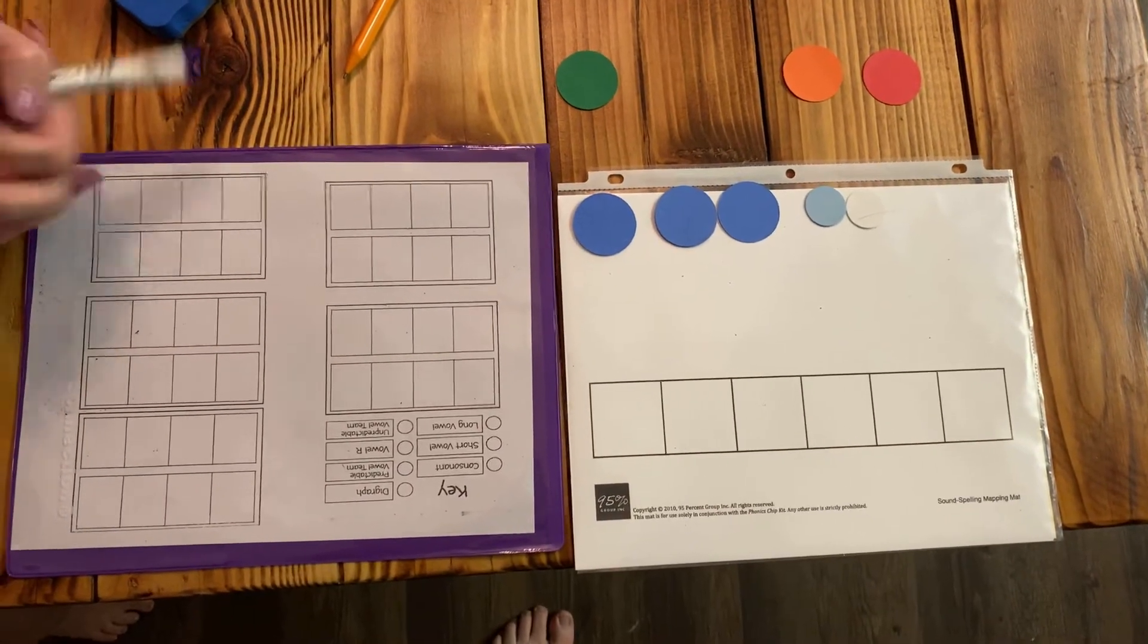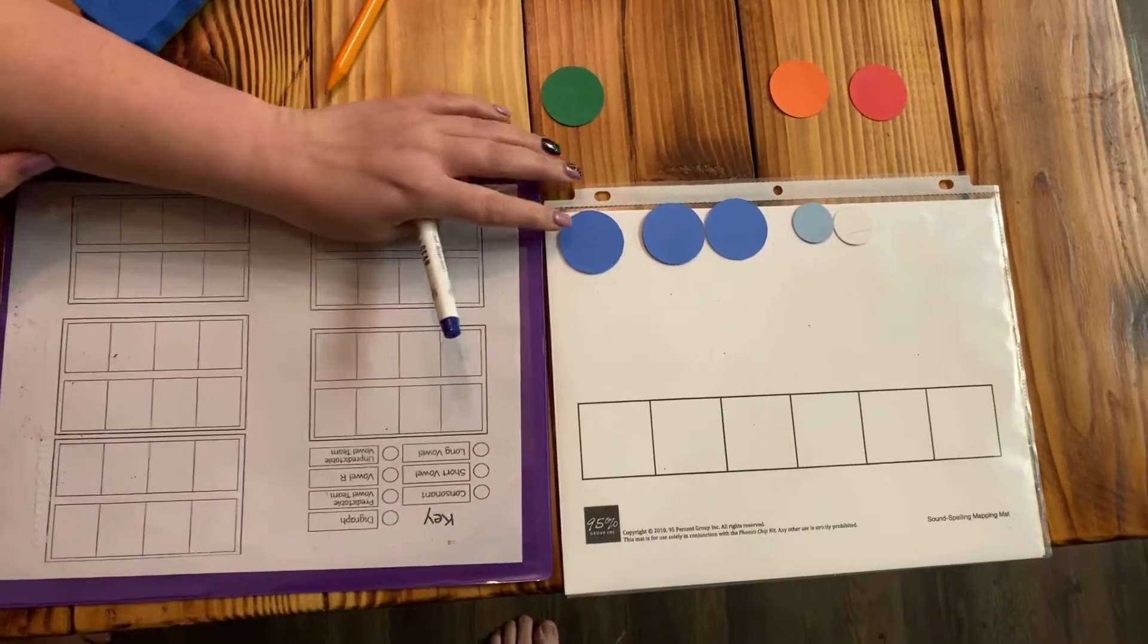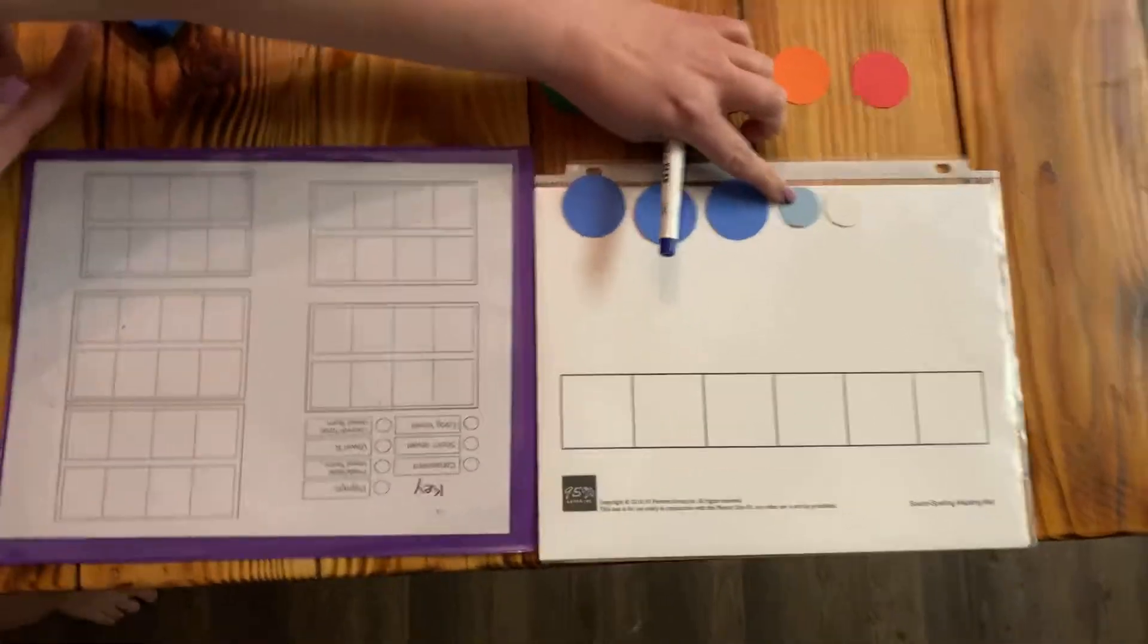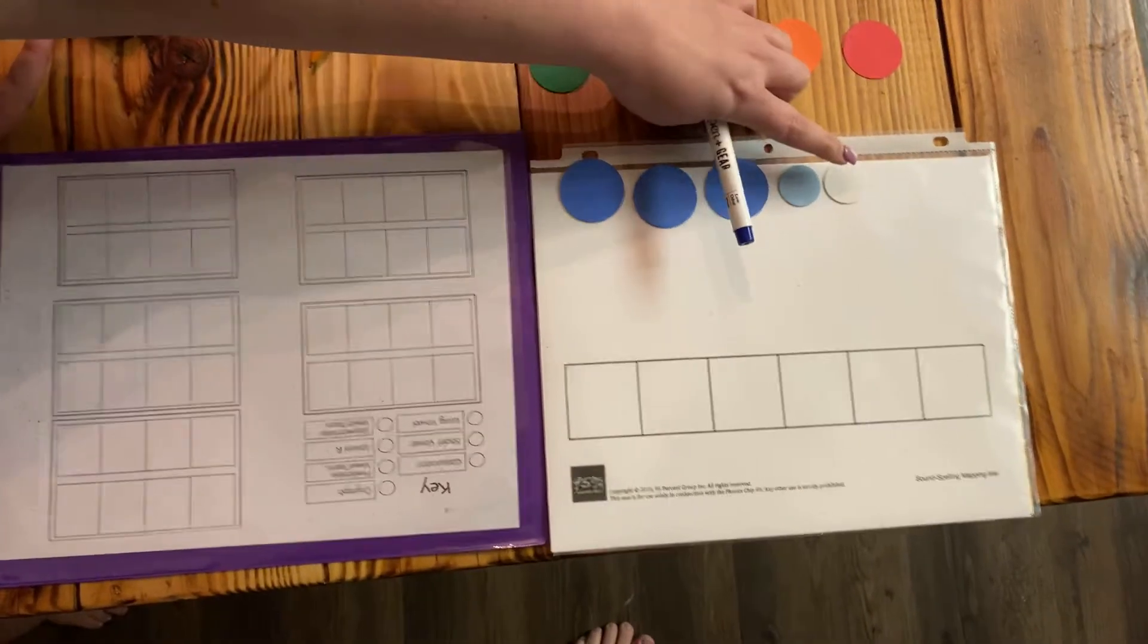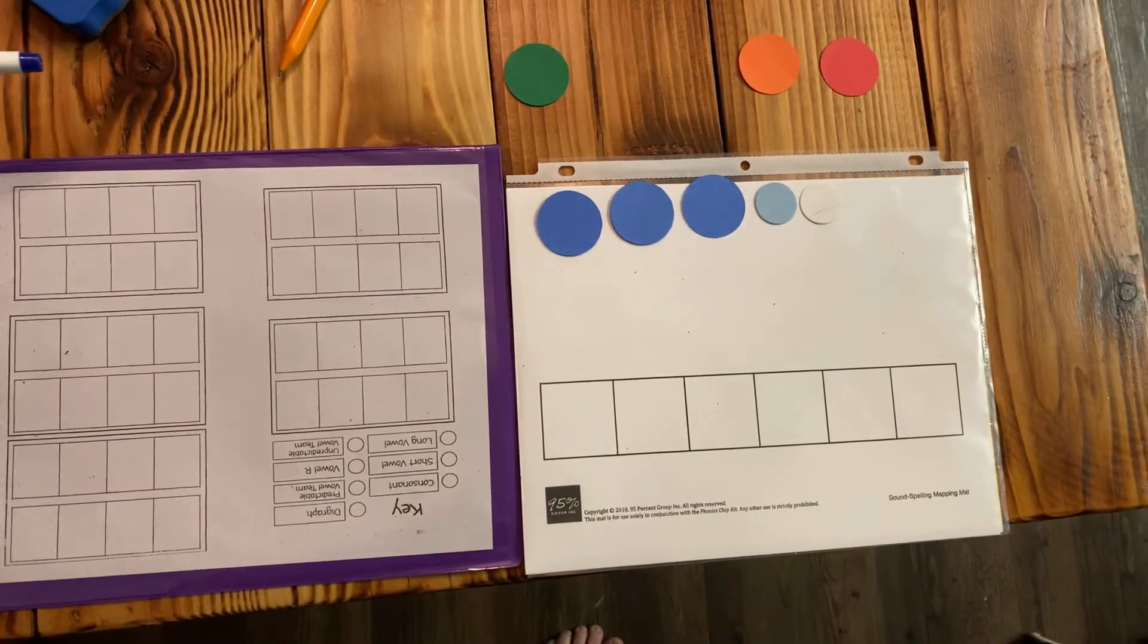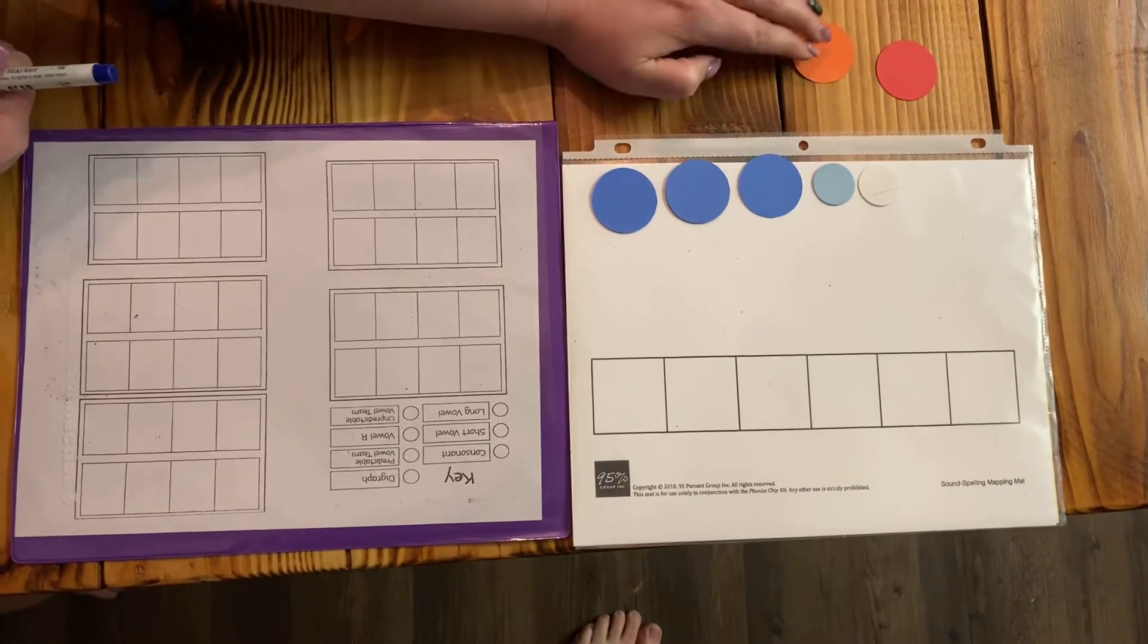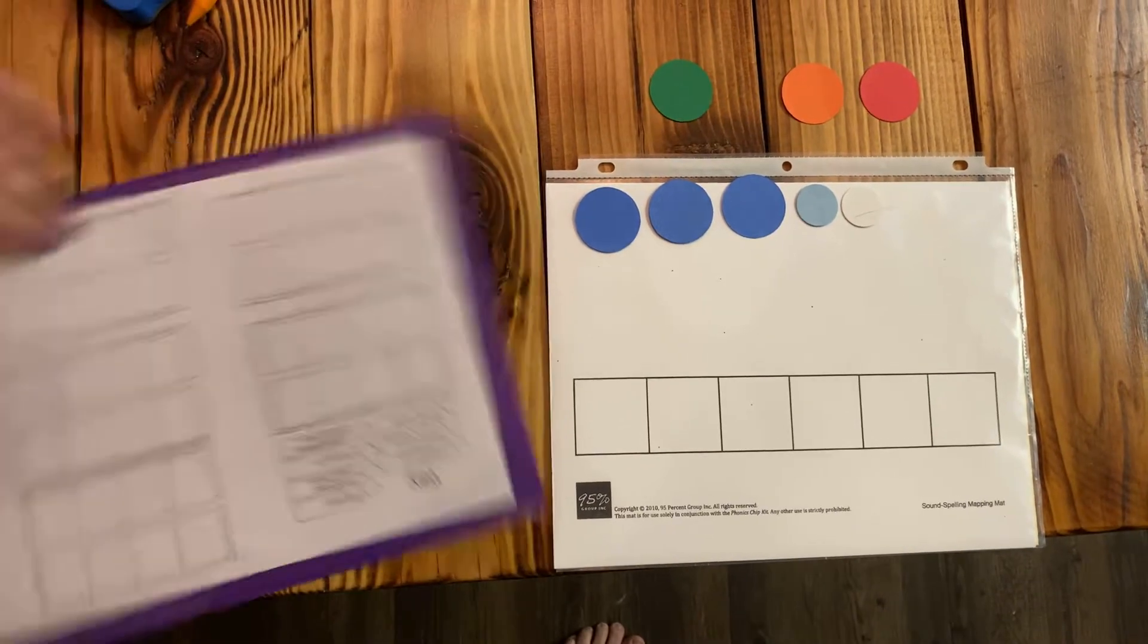We're going to be doing something very similar this week with the hard and soft G. Our blues are our consonants. Our light blue is going to be our soft G. We're going to use our white for our vowels and we will use a dark blue for the hard G sound. In addition, you guys should have your chips. Your red is your short vowel, your orange is your digraphs, and your green would be your long vowels.